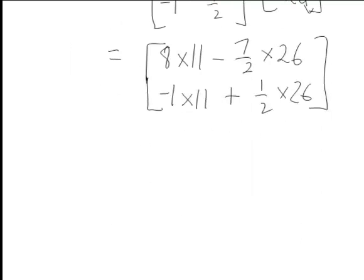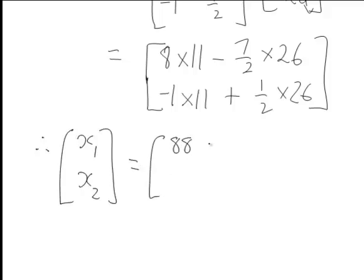And so therefore that's telling us that our column vector X1, X2 that becomes 88 minus 91, X1 and on the second part of this negative 11 plus 13 giving us negative 3, 2.